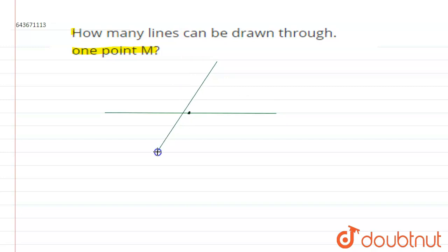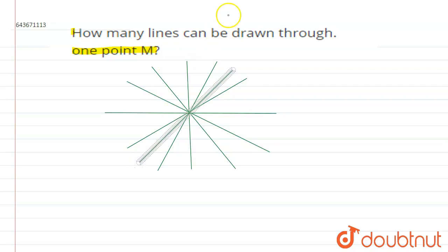And we can draw the line like this. One more line we can draw like this. One more. So continuously like this, we can draw as many lines as we want. So these are the lines we can draw through a single point.